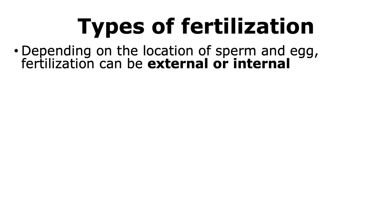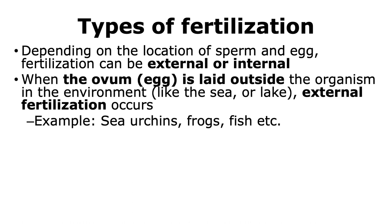There are two main types of fertilization: external fertilization and internal fertilization. In external fertilization, the ovum or egg is laid outside the organism's body and into the environment. The sperm fuses with the egg in the environment and not in the organism's body. This kind of external fertilization is observed in many different animals like sea urchins, frogs, fish, and other types of animals.